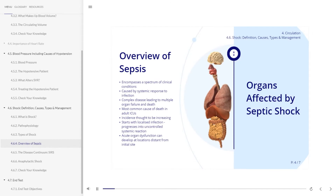Sepsis encompasses a spectrum of clinical conditions caused by the systemic response to infection. It is a complex disease that can lead to acute organ dysfunction, severe sepsis, followed by multiple organ failure and death. Sepsis and its sequelae are the most common causes of death in adult intensive care units, and the incidence of sepsis is thought to be increasing. Patients with sepsis usually present with a localized infection, which progresses into an uncontrolled systemic reaction.